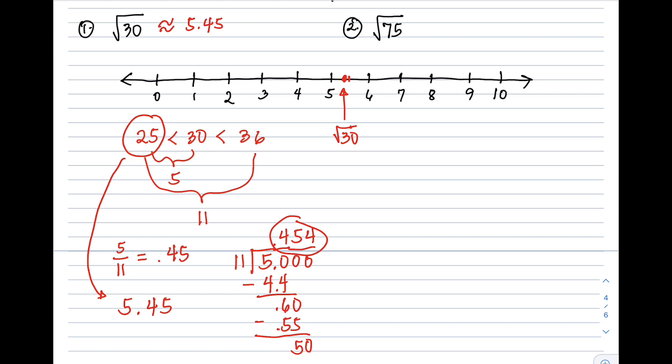Next, example number 2, square root of 75. Same procedure. First step is to get the two nearest perfect square numbers to 75, which are 64, that's 8 squared, and 81, that's 9 squared. So we have an idea that 75 is between 8 and 9. Next, we find the difference of 64 and 75, that is 11. Then the difference of 64 and 81, that is 17.